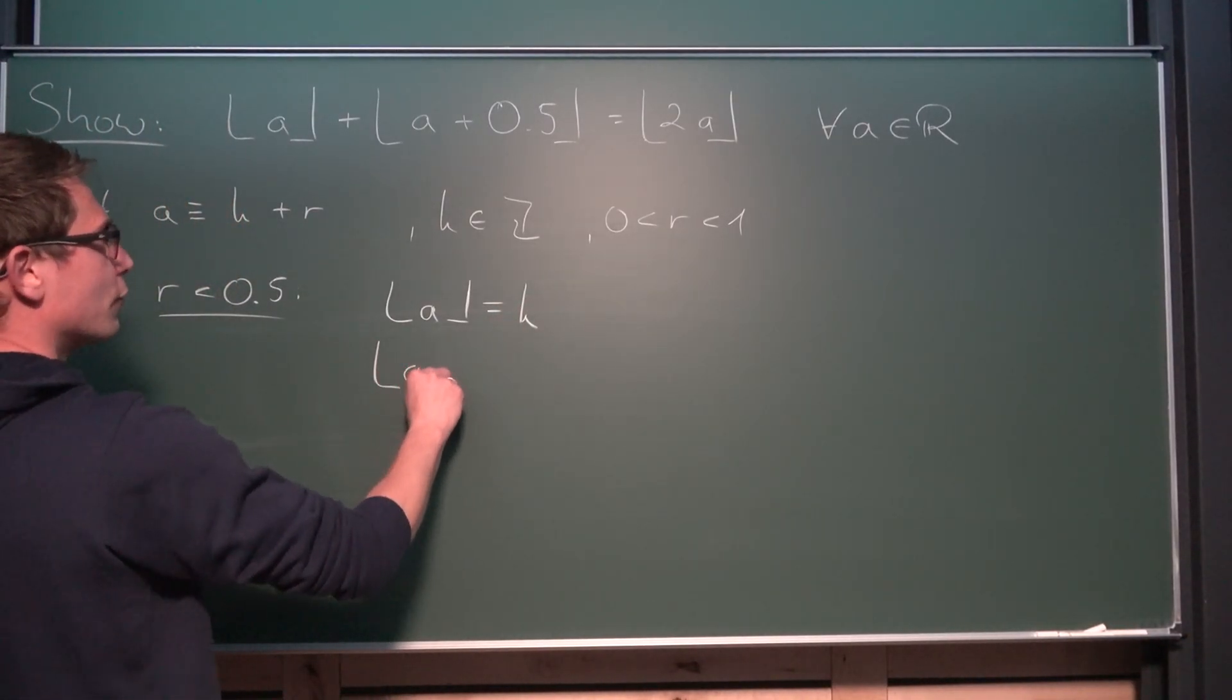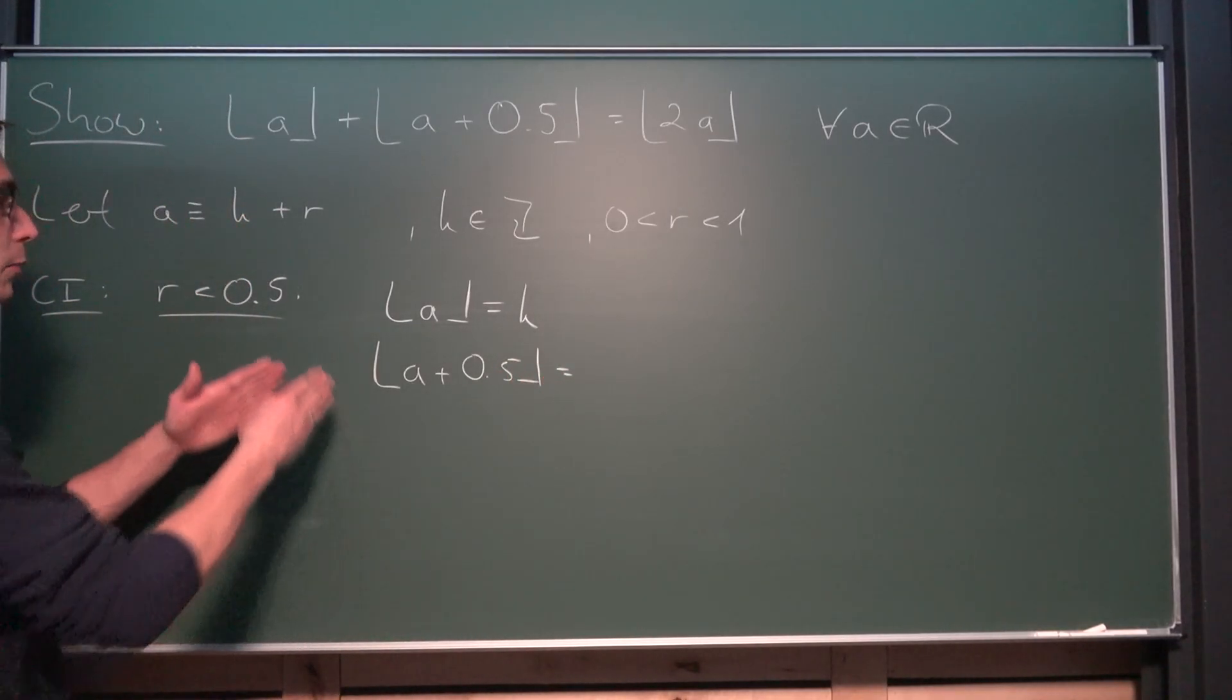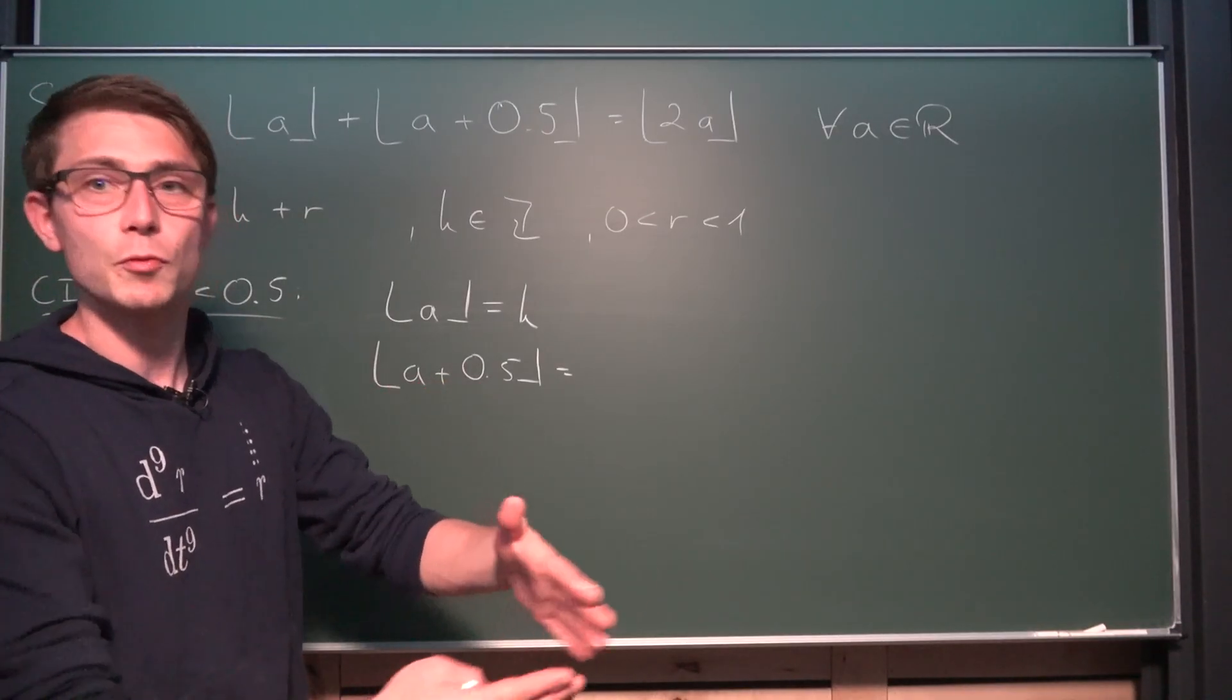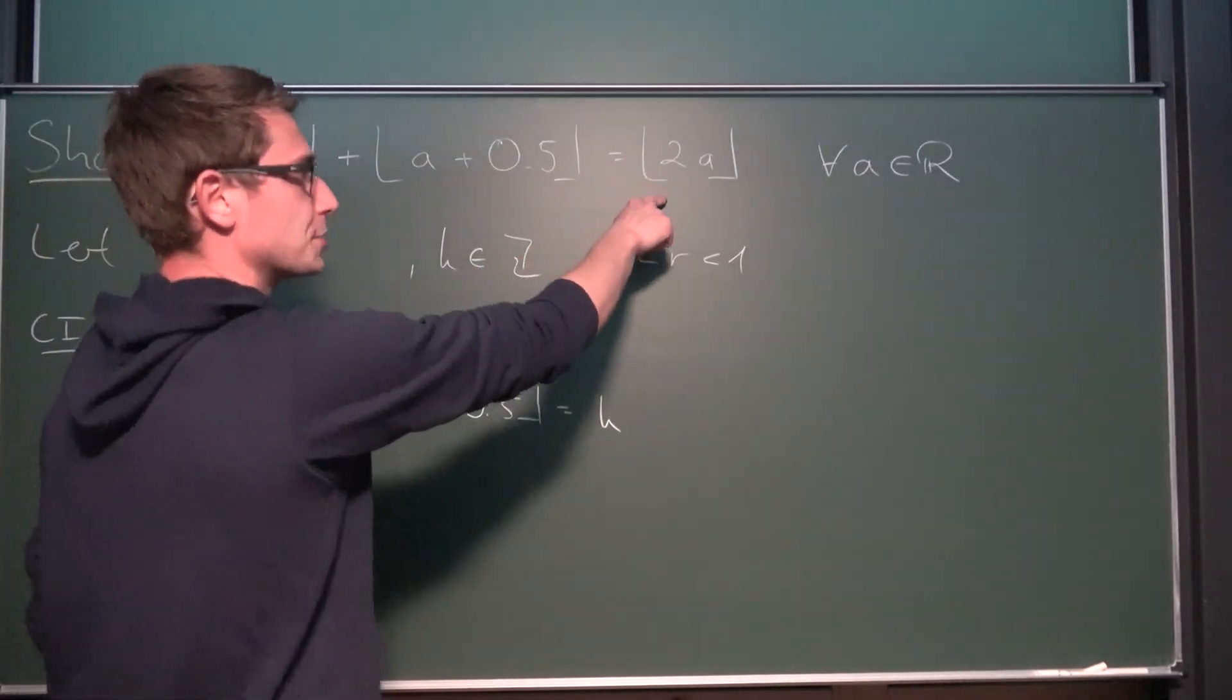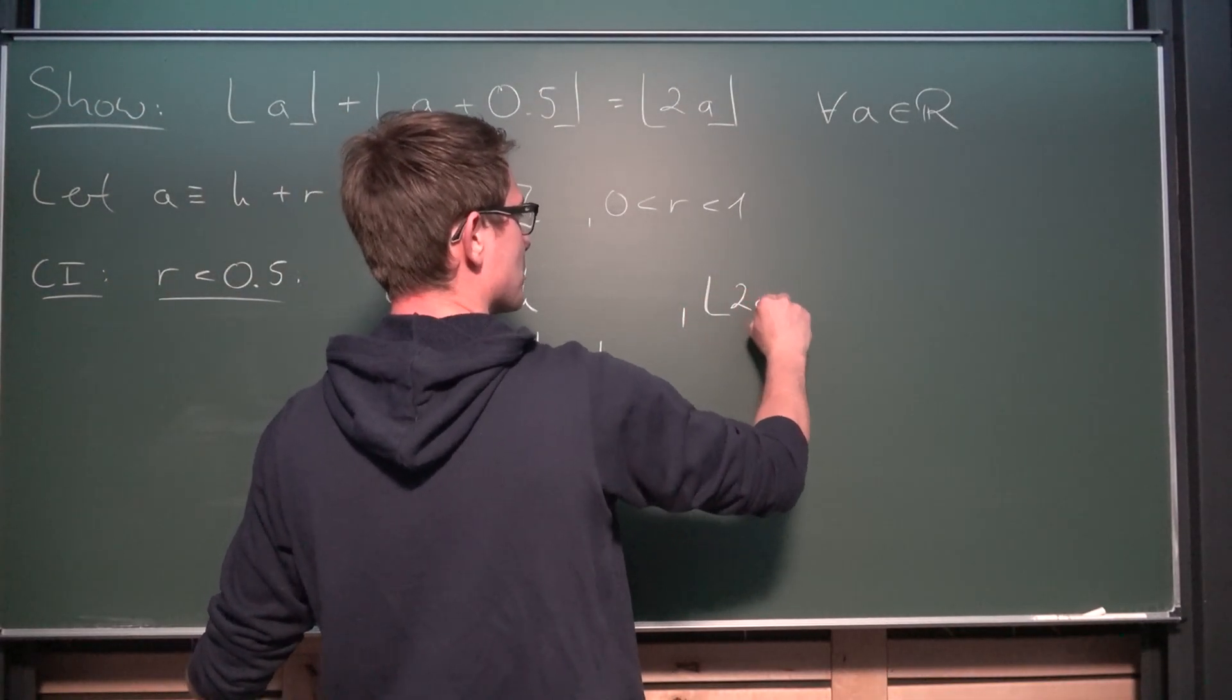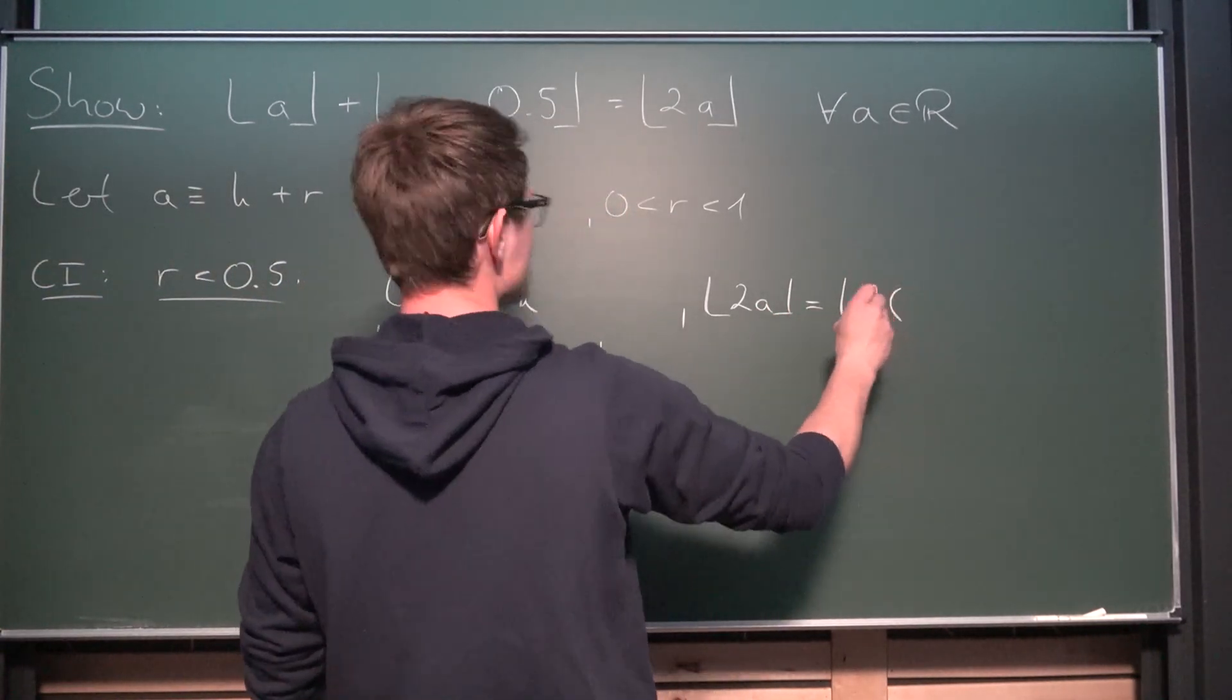Now what about the floor of A plus 0.5? As per my example that I told you about a second ago, we would have something like 3.4 plus 0.5 which rounds down to 3. This right here is going to give us exactly k once again. Okay, and now what about the right hand side, 2 times A. The floor of 2 times A is exactly by our definition of A the same as the floor of 2 times k plus r.